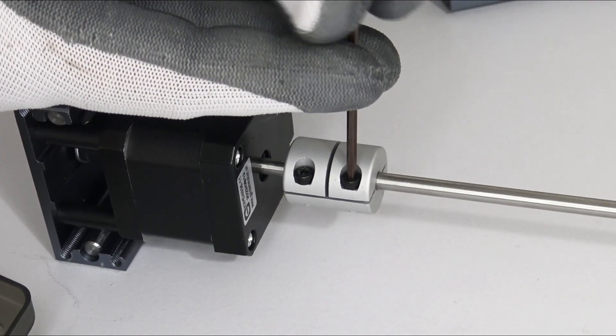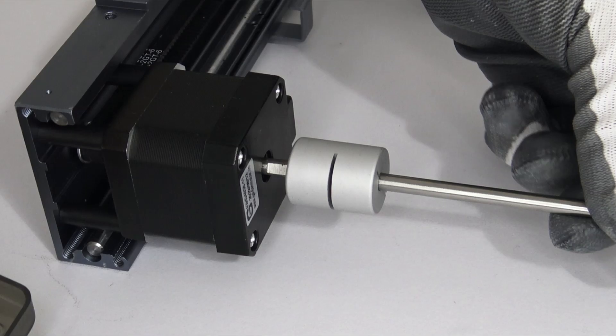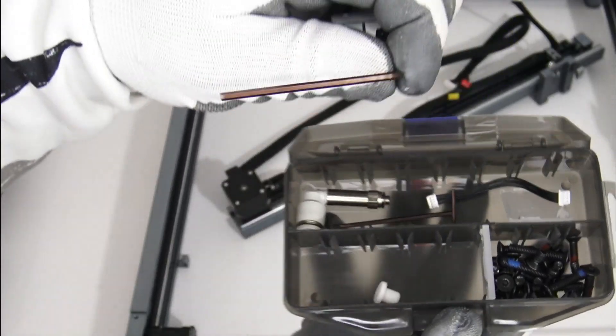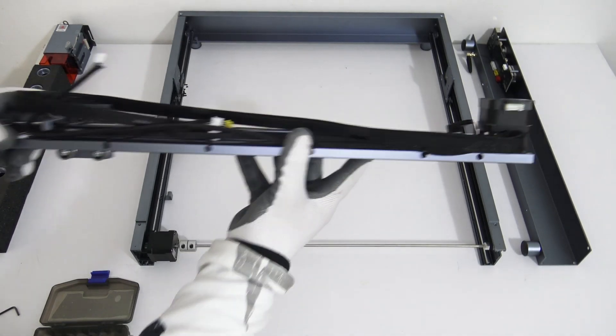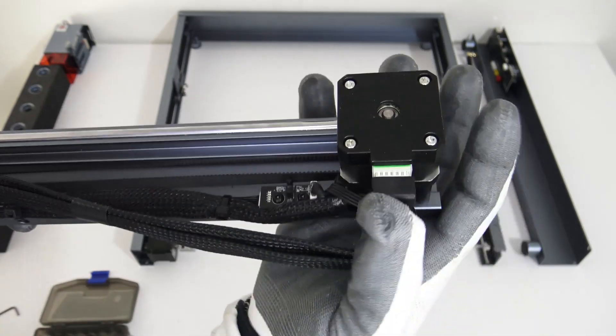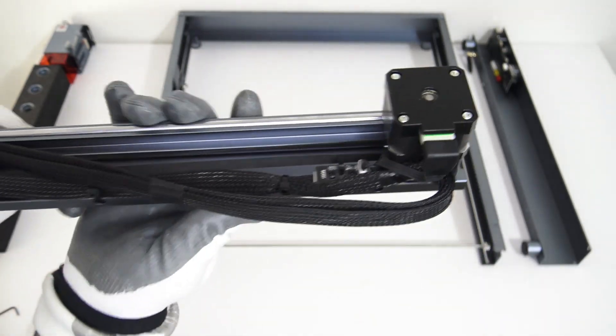Laser engraver also features a flame sensor and tilt sensor. In case of material catching fire or somebody lifts the machine, the machine will stop automatically, preventing damage or injury.